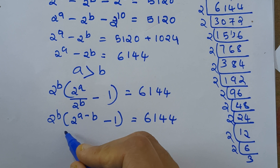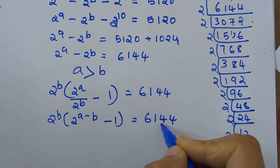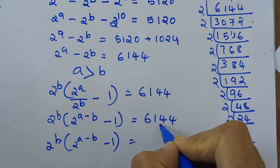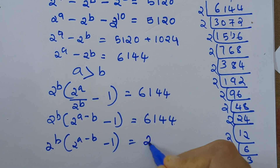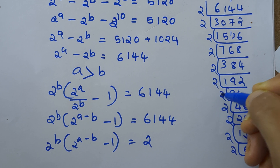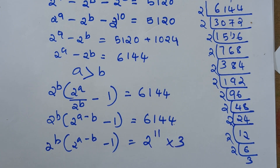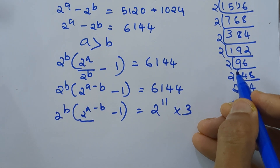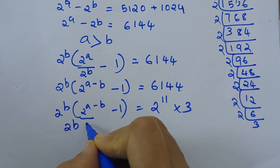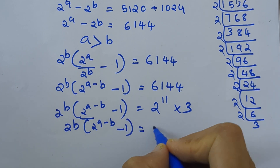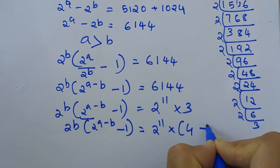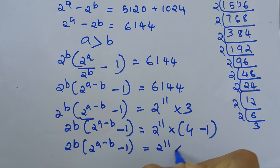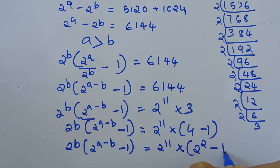We can represent 6144 as 2 raised to b into 2 raised to a minus b minus 1, equal to 6144, which can be written as 2 raised to 11 into 3. And 3 can be written as 4 minus 1, so that is 2 raised to b into 2 raised to a minus b minus 1, equal to 2 raised to 11 into 2 squared minus 1.